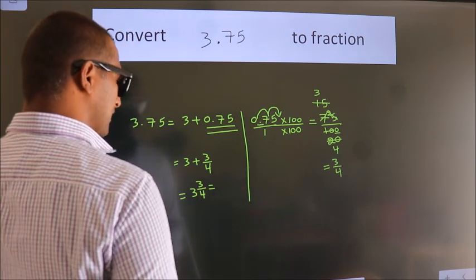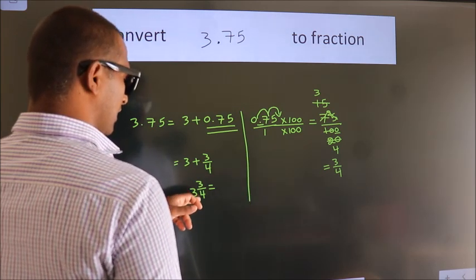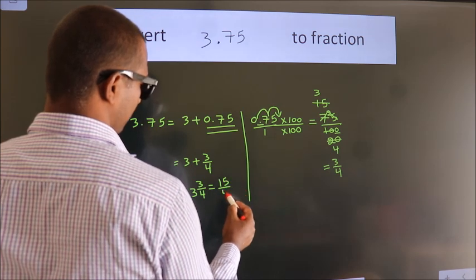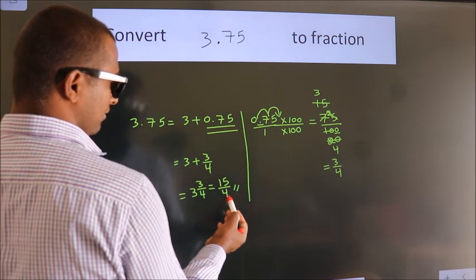And in improper fraction it is 3 into 4, 12 plus 3, 15 by 4 is our fraction.